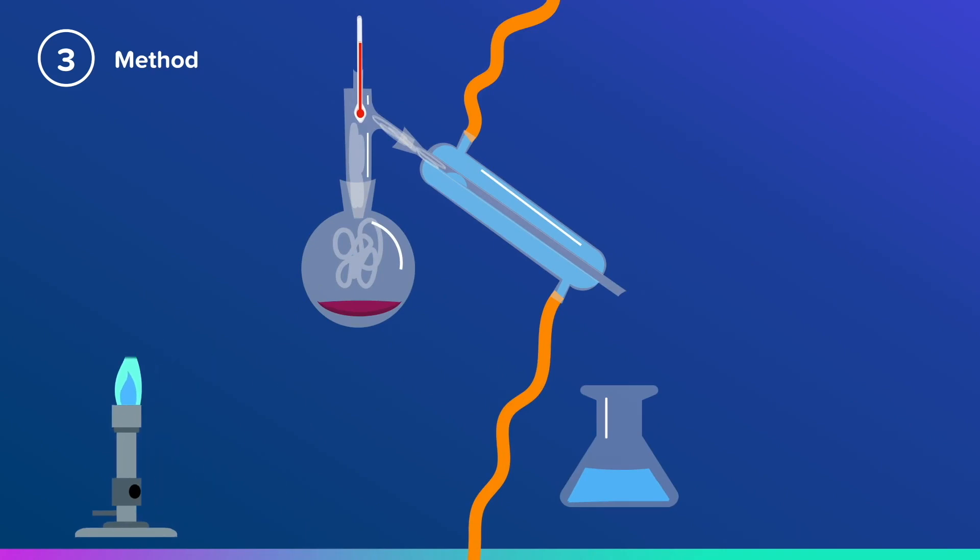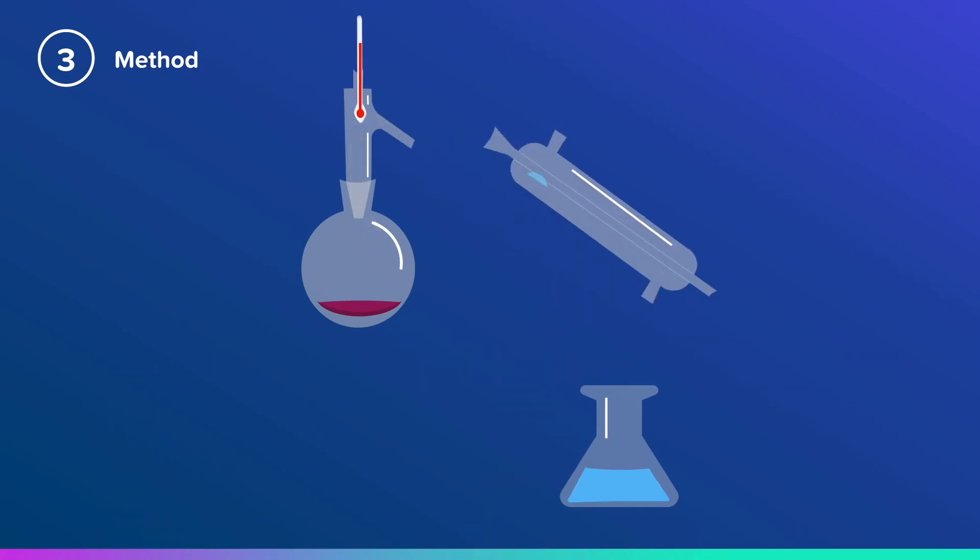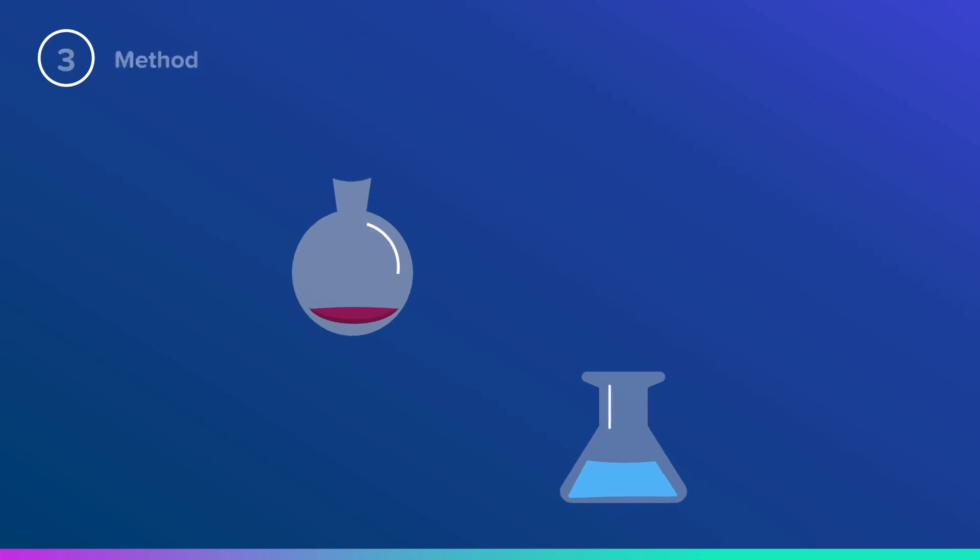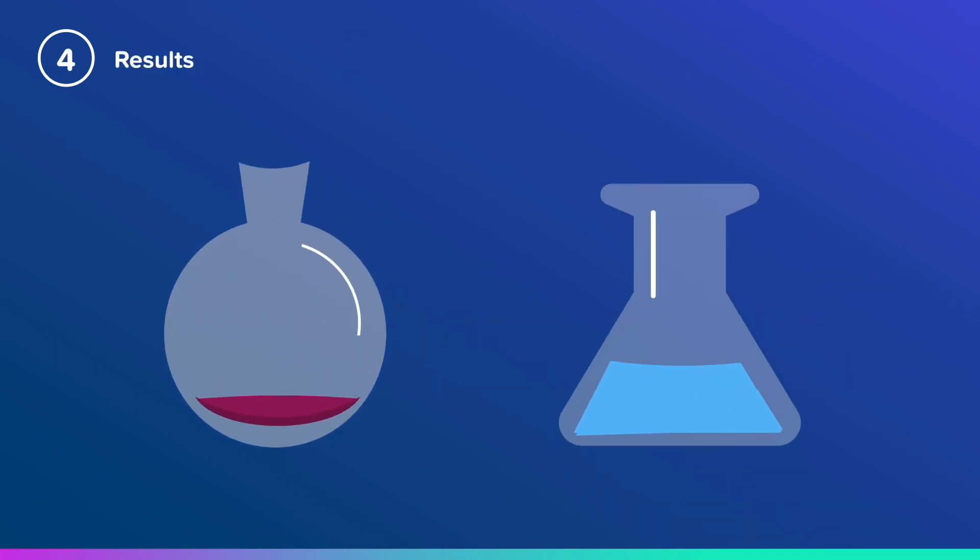Switch off the tap, and then carefully disassemble the apparatus, remembering that the round-bottomed flask will still be hot. At the end, the dye will be left in the round-bottomed flask, and you'll have pure water collected in the conical flask.